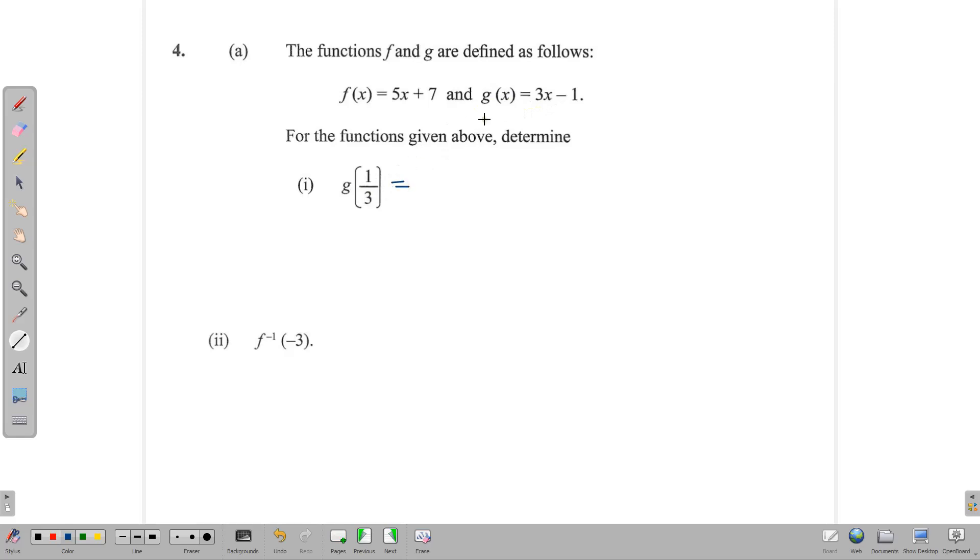What it's really asking us is to plug 1/3 into g and see what we get as a result. We're going to substitute 1/3 into g. g of x is equal to 3x minus 1. So we substitute the x with 1/3. It becomes 3 times 1/3 minus 1. That gives us 3 times 1/3 minus 1. 3 times 1/3 is 1, and 1 minus 1 gives us 0. So when we input 1/3 into this g function, what we get out is 0. So g of 1/3 is equal to 0.